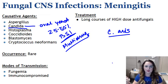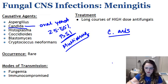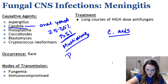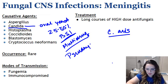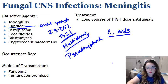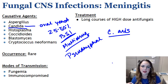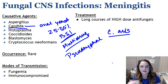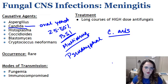Candida can be diagnosed in a couple of different ways. It doesn't actually produce true hyphae — it produces what we call pseudo-hyphae, and that's one way you can visualize it. There's also the germ tube test, and you can use H&E staining, PAS, and GMS stains — so there are a lot of different options for diagnosing candida.